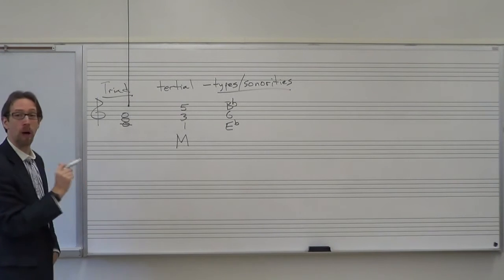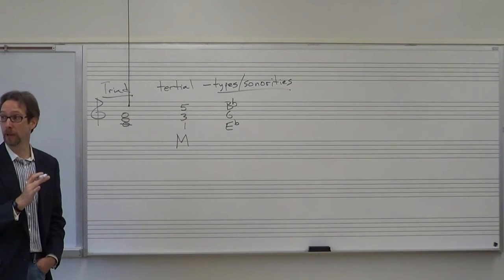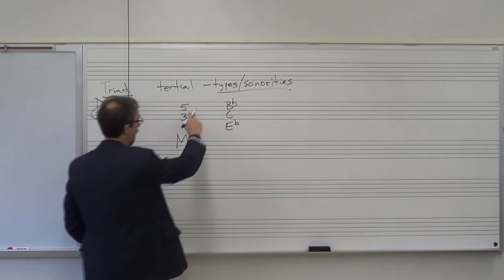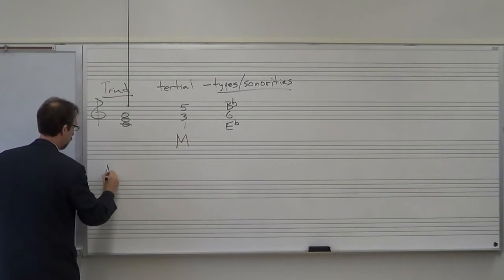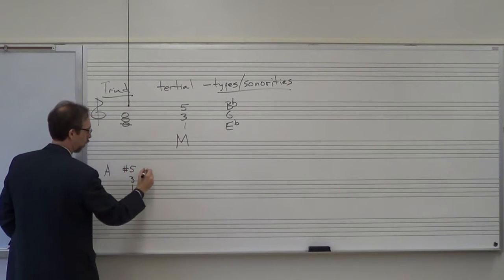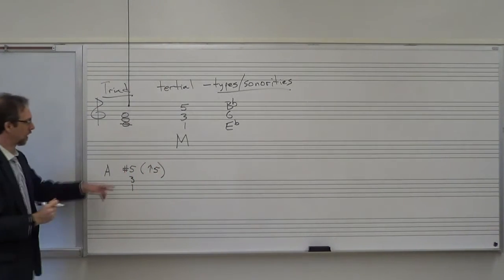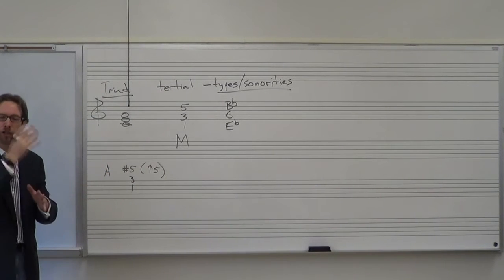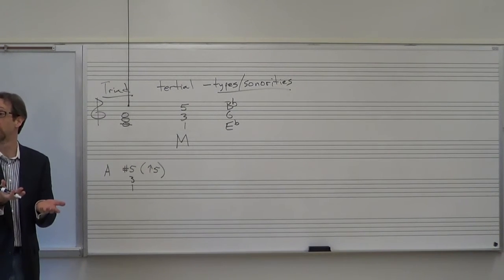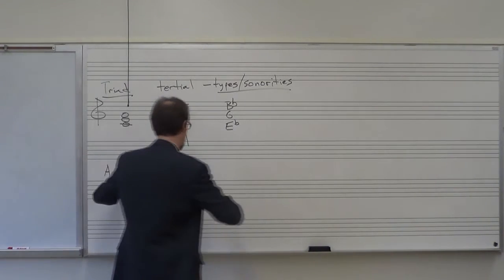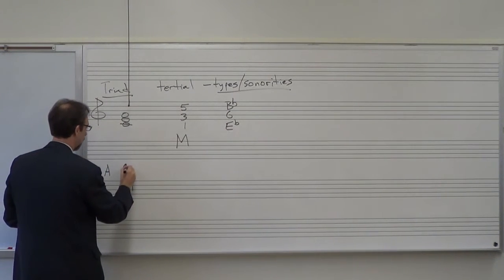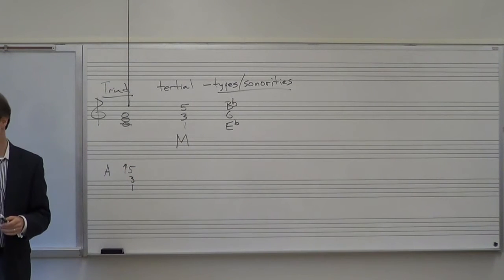Now, how can we modify — what formula can we apply to get our other triads? If we have our major triad as 1, 3, 5, for an augmented triad it's 1, 3, raised fifth. This sharp doesn't necessarily mean a sharp sign — it means we're going to raise it a half step from whatever it would normally be in the major scale. So sometimes people will say 'sharp 5' — I'm going to write 'raised fifth' so we understand you might not actually see a sharp sign.